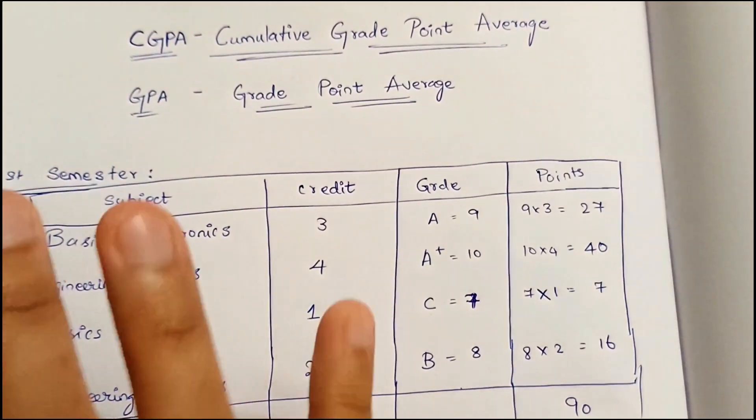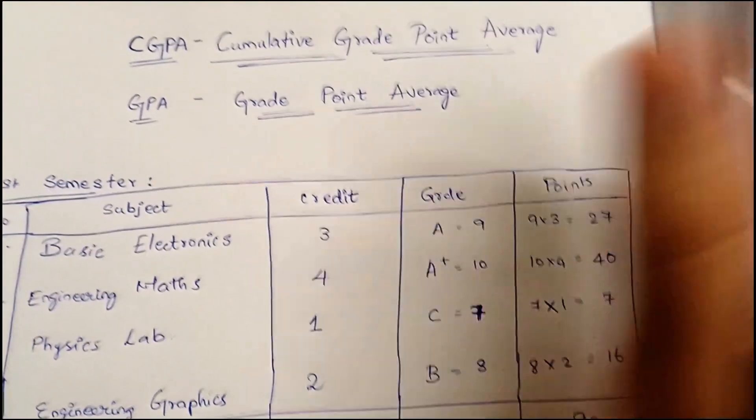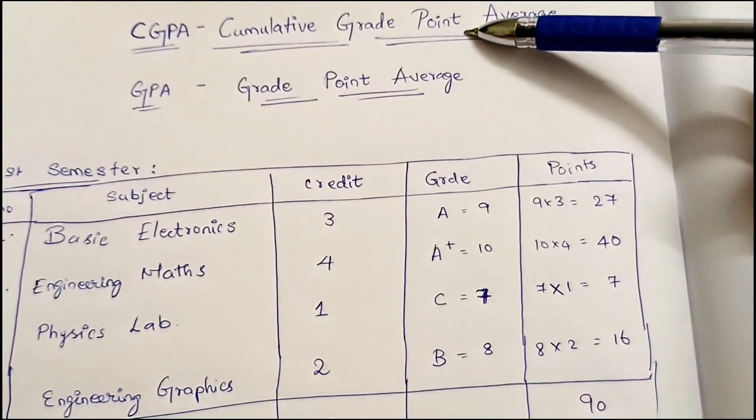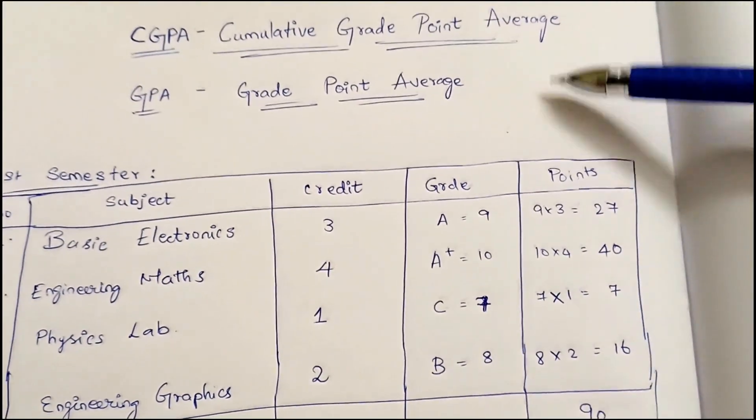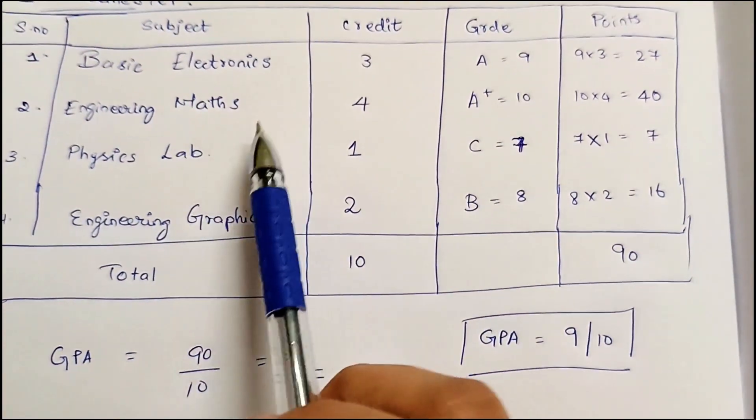Now let's go on to the CGPA and GPA calculation. I don't have a whiteboard so I will explain using a rough notebook — I'll try to keep it simple. I've prepared a small chart to explain what GPA and CGPA are and how they are calculated. CGPA stands for Cumulative Grade Point Average, and GPA stands for Grade Point Average.